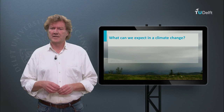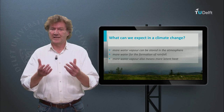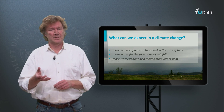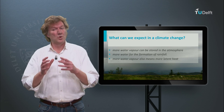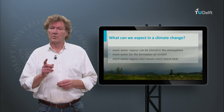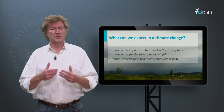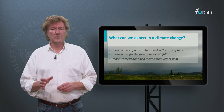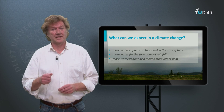What can we expect in a changing climate? We have learned from the Clausius-Clapeyron curve that the warmer it gets, the higher the saturation pressure becomes. More water vapor can be stored in the atmosphere before it condenses into liquid or sublimates into ice. So more water is available in the atmosphere for the formation of rainfall. More water vapor also means more latent heat waiting to be released during condensation, which can drive more convection. All in all, global warming can lead to more rainfall and possibly increase the number of intense rainstorms.